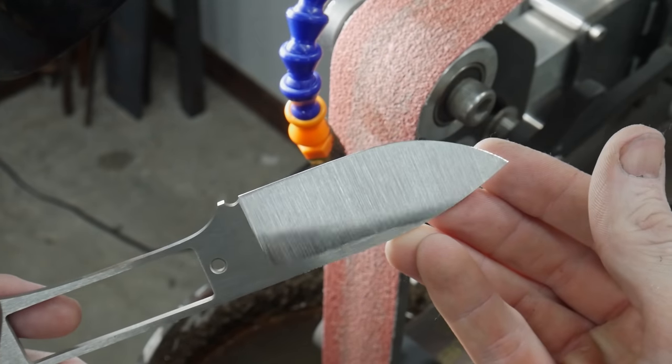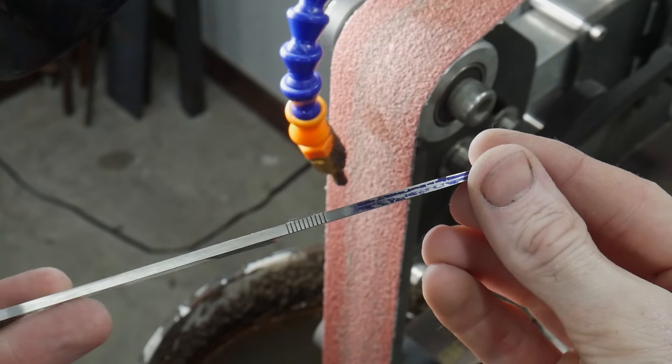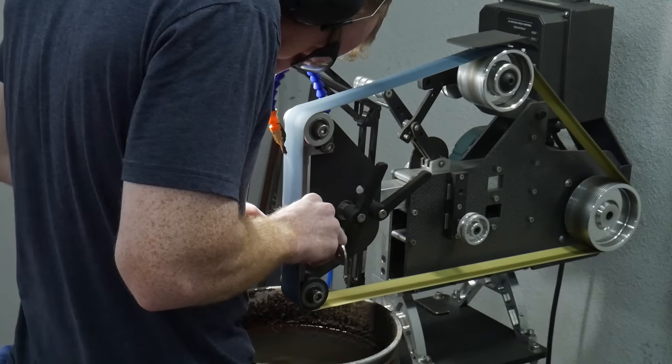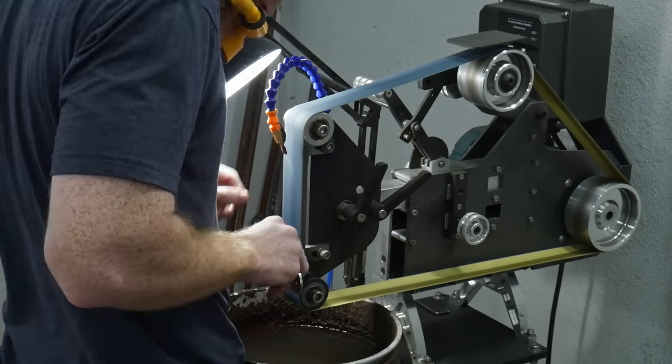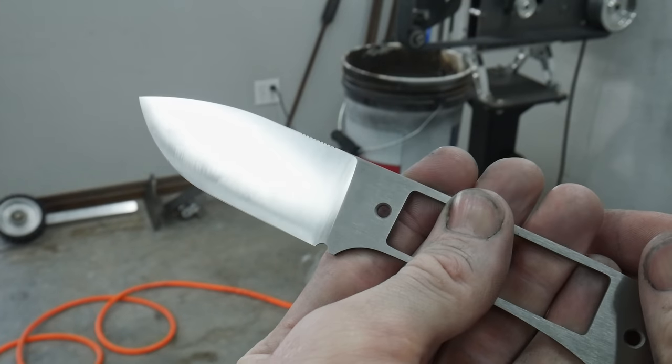For this knife, my belt progression started with a 60 grit ceramic belt, followed by 120 and 220 J-flex belts. Lastly, I hit the knife briefly on a Scotch-Brite belt just because I like the finish that it leaves.